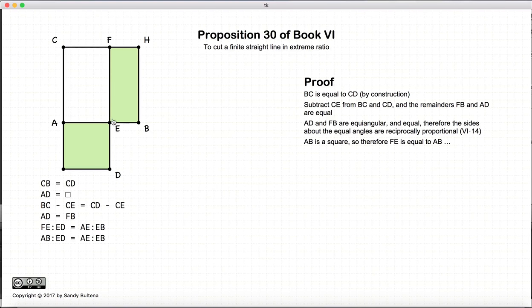Now let's look at ED. ED is equal to AE because it is also part of a square, so if we replace ED with AE, now we're replacing ED with AE, and now we're left with that AB to AE is equal to AE to EB, which is what we were trying to prove. This is the extreme ratio.